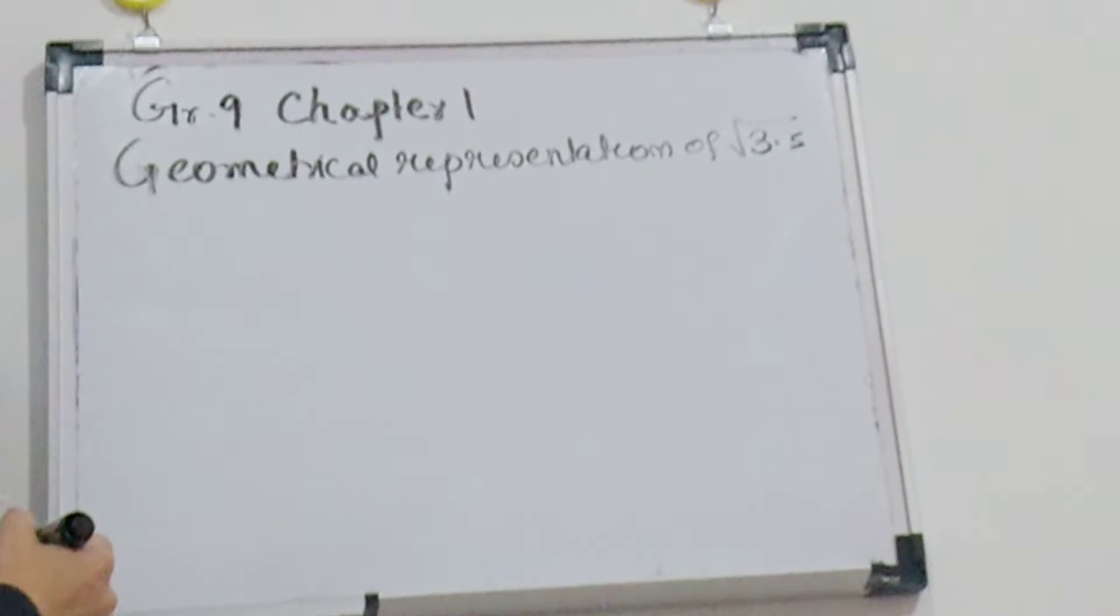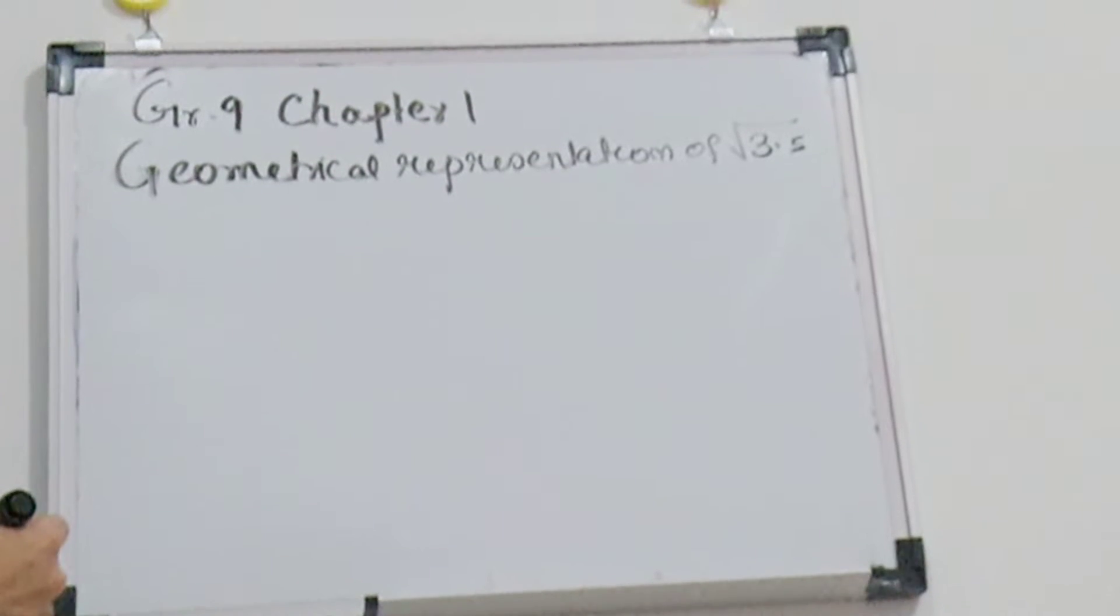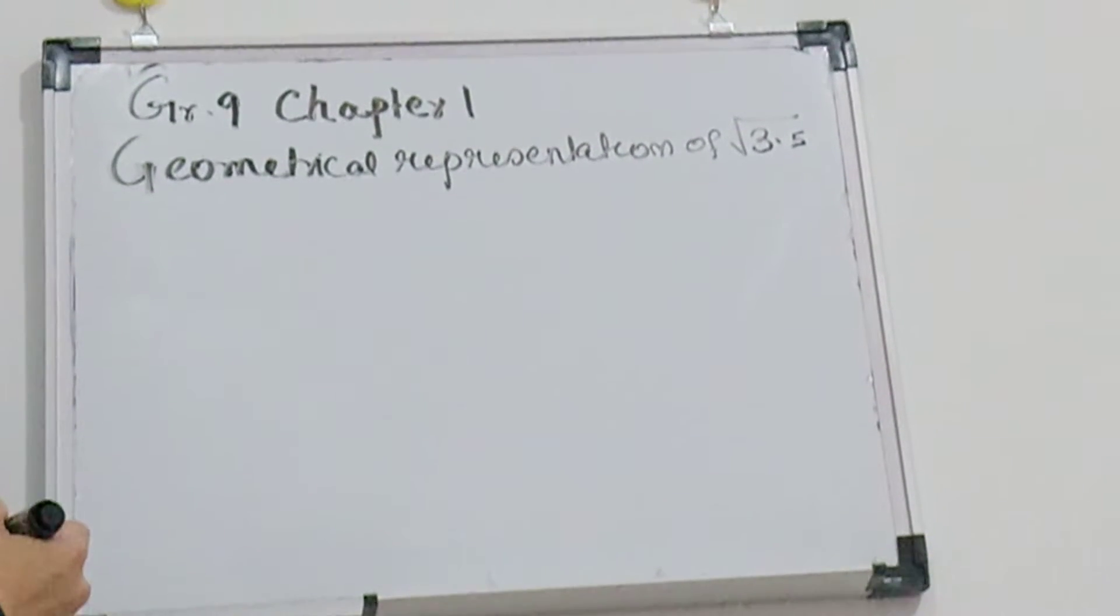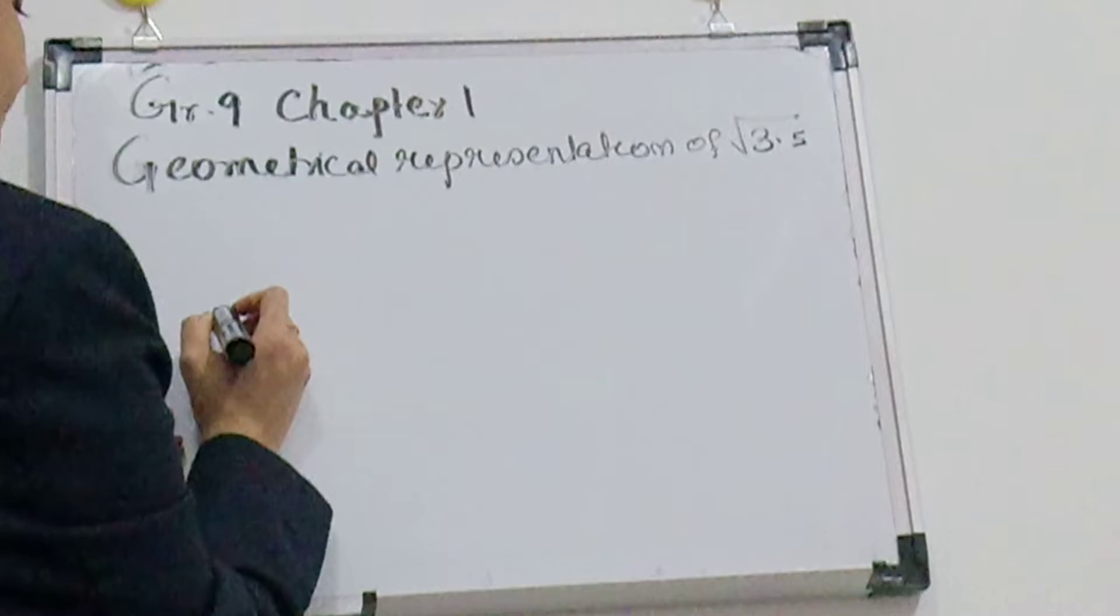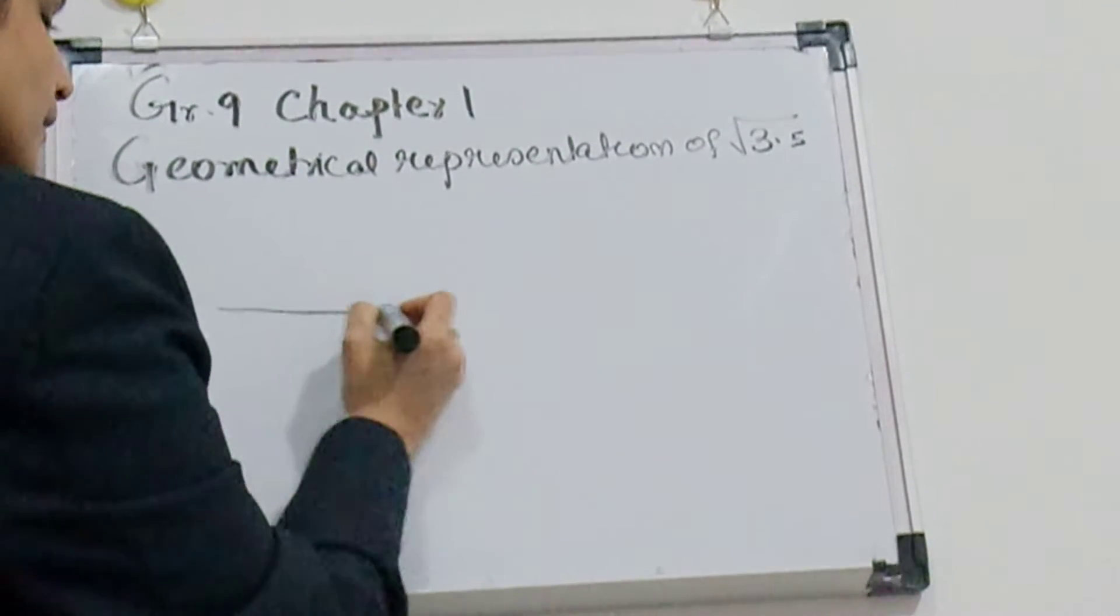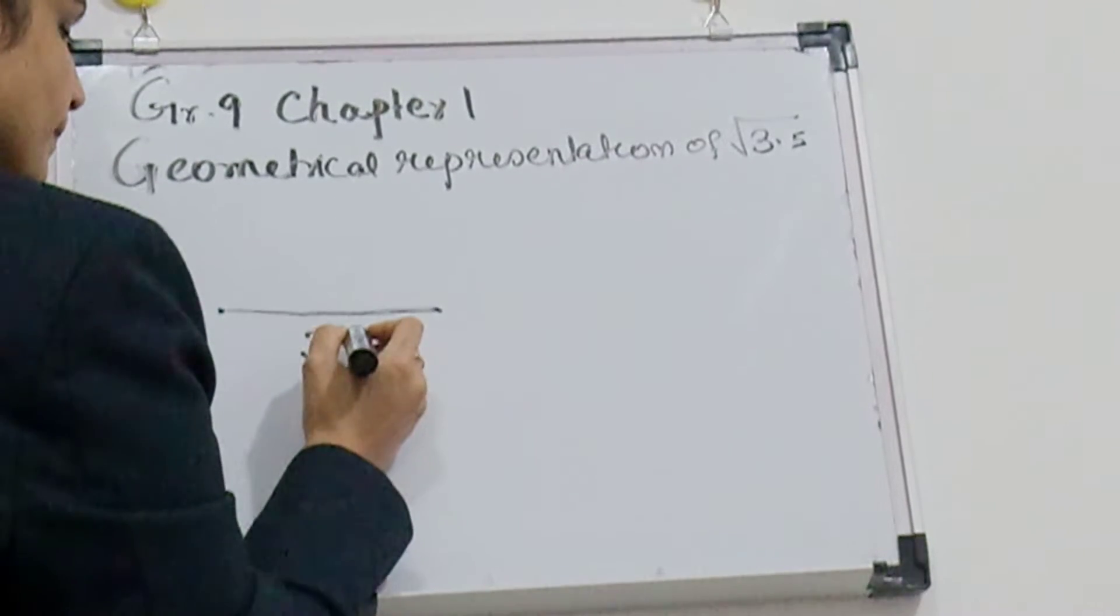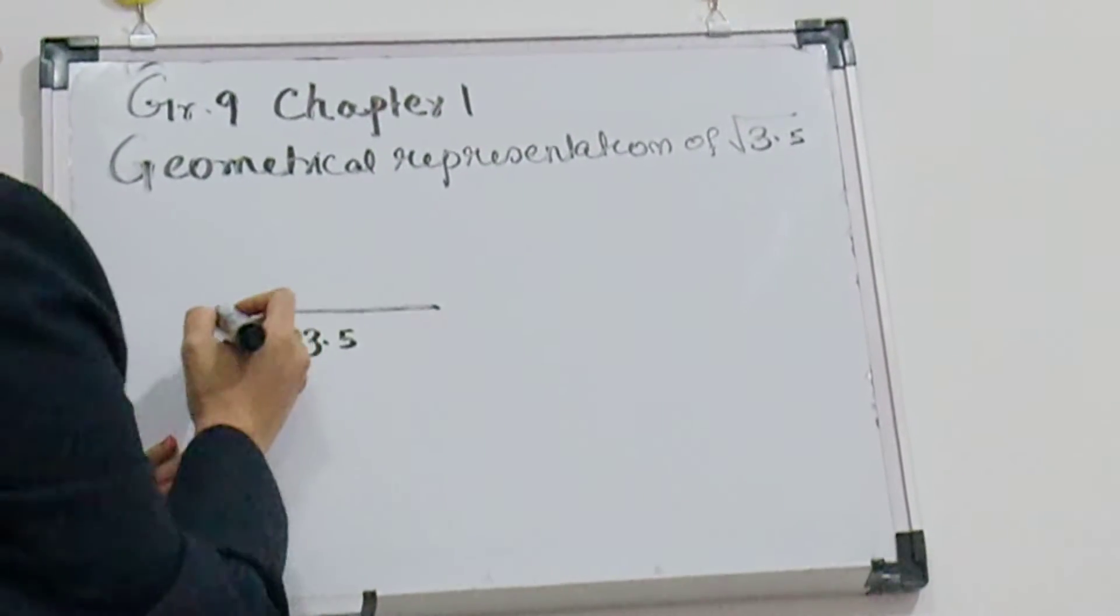Now we are going to do this question: geometrical representation of root of 3.5. How do you represent root of 3.5 on the number line? For this you use a scale and take 3.5 line and mark it.